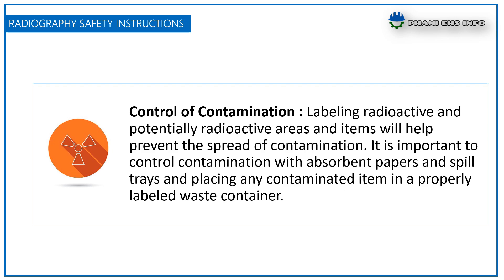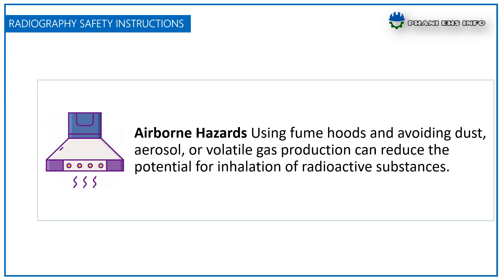Regarding control of contamination: labeling radioactive and potentially radioactive areas and items will help prevent the spread of contamination. It is important to control contamination with absorbent papers and spill trays, and to place any contaminated items in properly labeled waste containers. Regarding airborne hazards, using fume hoods and avoiding dust, aerosols, or volatile gas production can reduce the potential for inhalation of radioactive substances.